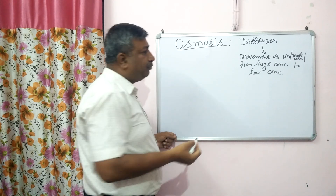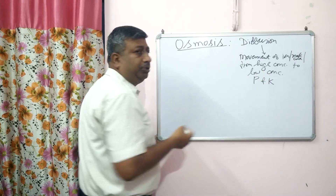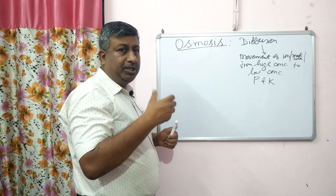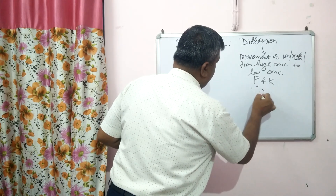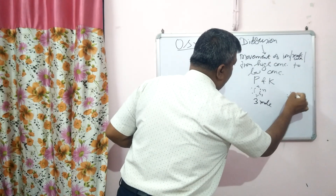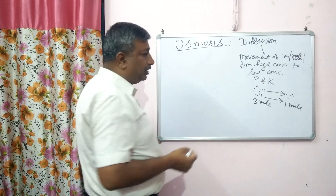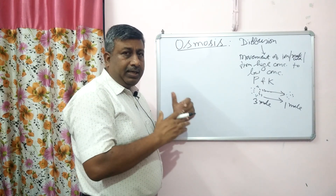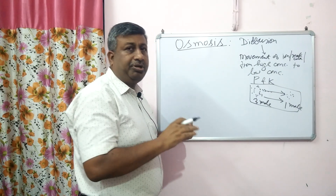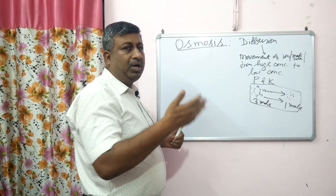In soil solution, phosphorus (P) and potassium (K) move through diffusion — this is an important question generally asked in competitive examinations. Diffusion is the movement of a nutrient or ion from where there is high concentration to low concentration. Suppose there are 3 moles of any ion here and only 1 mole there; the ion moves from high concentration to low concentration. This is random thermal motion to balance molecule concentration. Diffusion continues until equal concentration is maintained on all sides.